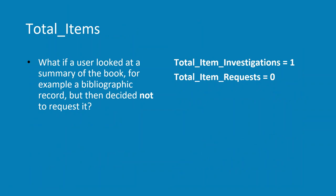I was asked a question recently which I think is quite useful. The question was: what if a user looked at a summary of a book — for example, a bibliographic record — but then decided not to request it? The answer is that would be total item investigations: one, total requests: zero.